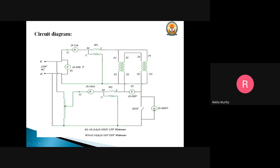Once the voltmeter reads zero, the SPST switch is closed. By operating the autotransformer, the voltage is applied. We close the SPST switch and vary the autotransformer such that the voltage applied to the secondary is increased gradually until the transformer carries the rated current — that is 8.7 amperes for a 2 kVA transformer, as discussed in the previous session. The readings of all meters are noted and tabulated. Then bring the autotransformer back to zero voltage position and open the SPST switch.